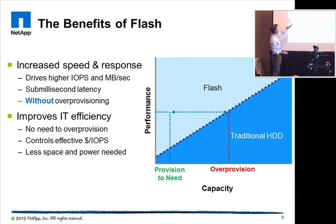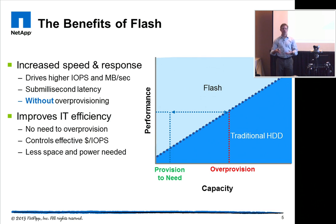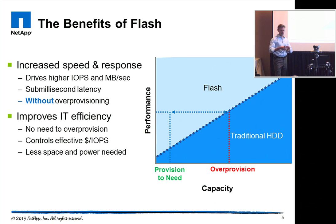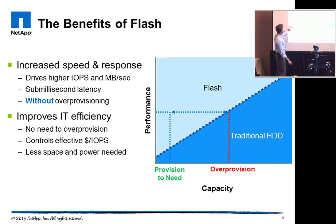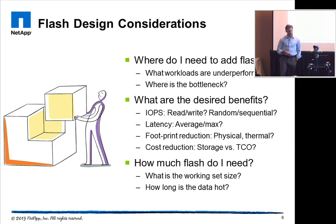The other benefit is IT efficiency. By limiting over-provisioning, you're actually reducing the effective dollar-per-IOPS cost of the storage platform, bringing it much more in line with what a customer would actually expect versus having to deploy a lot of disk without thinking about the aggregate cost to meet their IOPS requirements. From a green standpoint, it's really about less space and less power being needed.